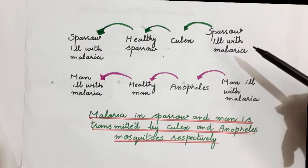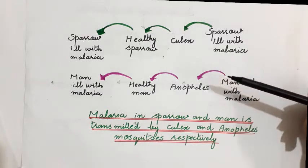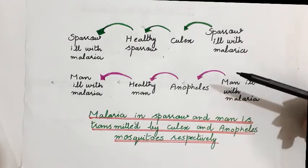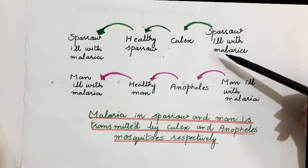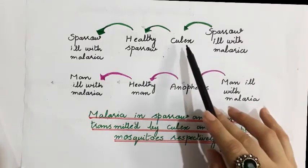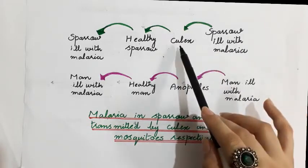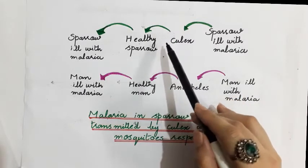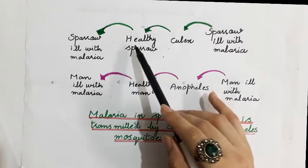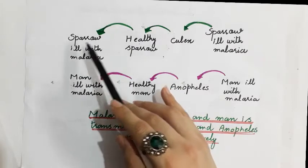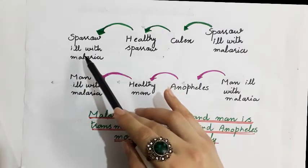To summarize Ronald Ross's experiment: a sparrow ill with malaria carried plasmodium. When a Culex mosquito bit that ill sparrow and then bit a healthy sparrow, plasmodium was transmitted into the healthy sparrow. The healthy sparrow then became ill with malaria — it became a malarial sparrow, also infected with malaria.